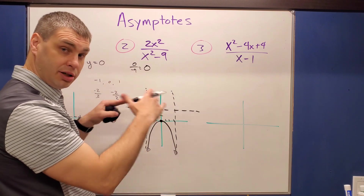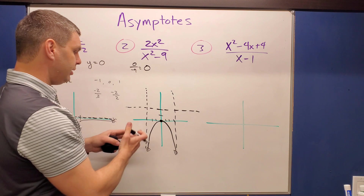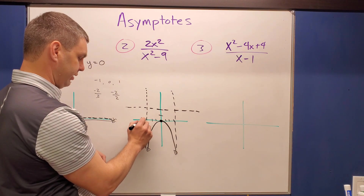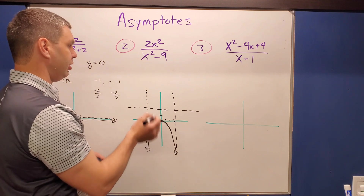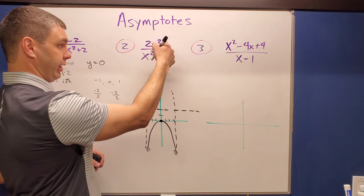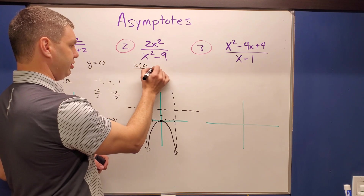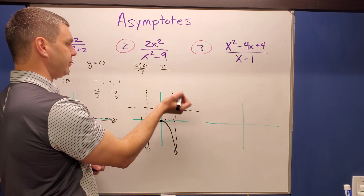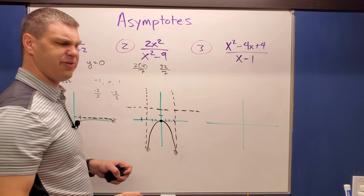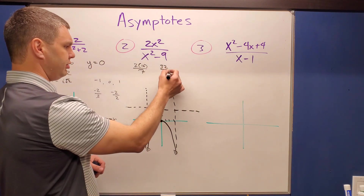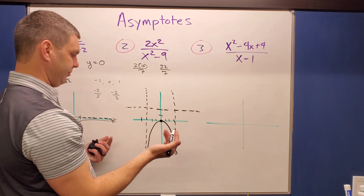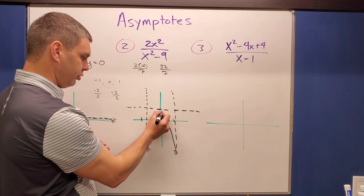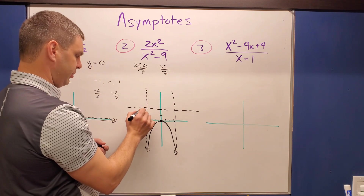For the left region, let's test x equals negative four. Negative four squared is 16, so the numerator is 2 times 16 equals 32. The denominator is 16 minus nine equals seven. So we get 32 over 7, which is about 4.5 — well above the horizontal asymptote at y equals two.